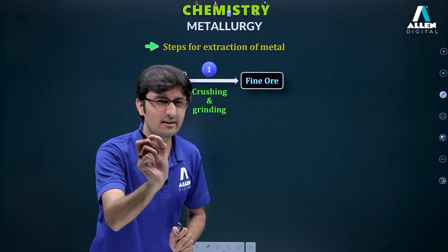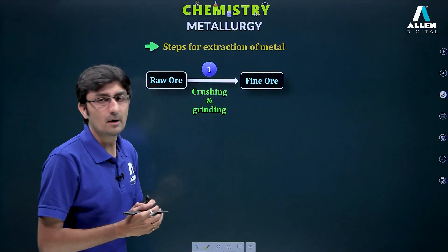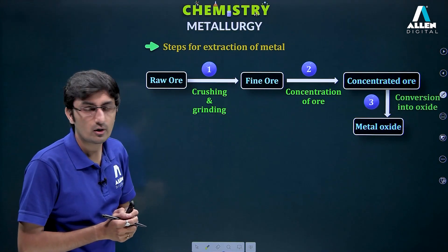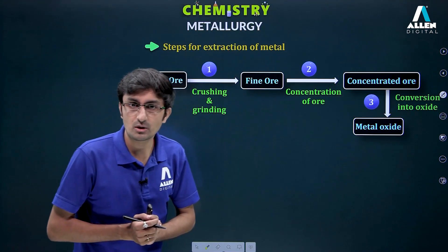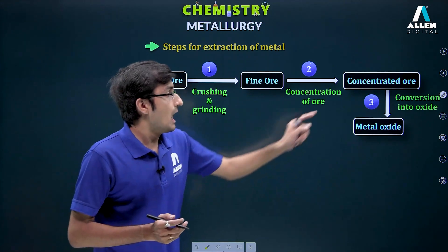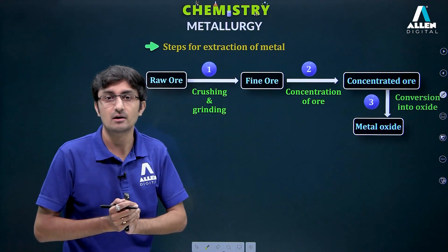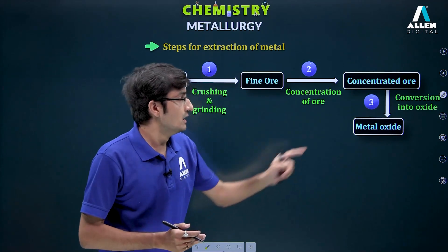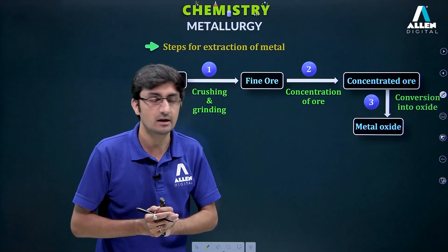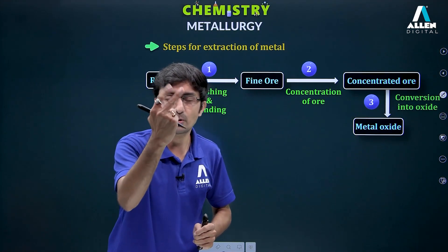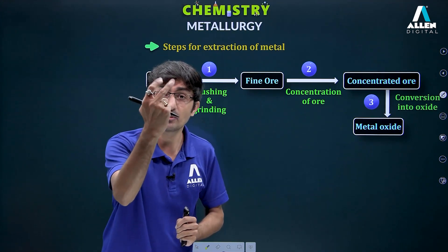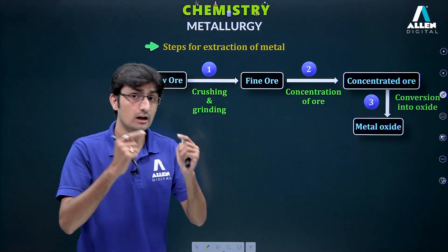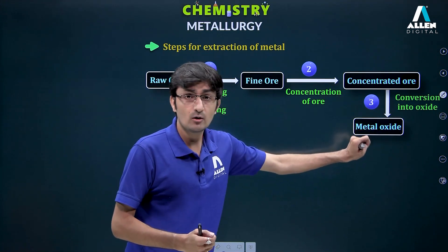Naturally, the ore has impurities called matrix or gangue particles, so we must remove them — this is the process of concentration. If we then convert the ore to metal oxide, we have two processes: calcination, done in the absence of air, and roasting, done in the presence of air.